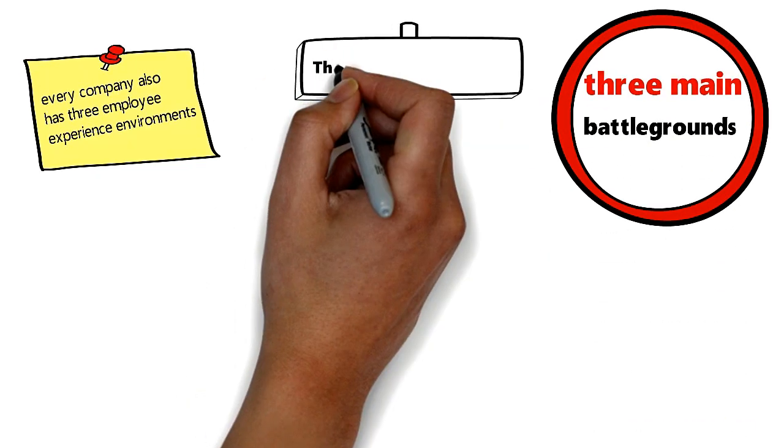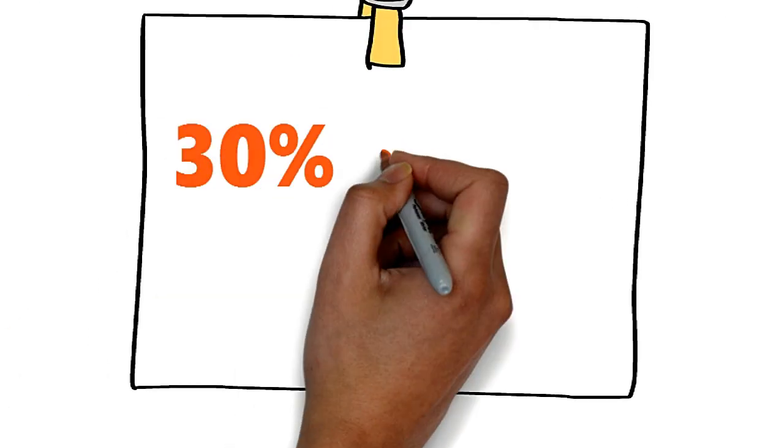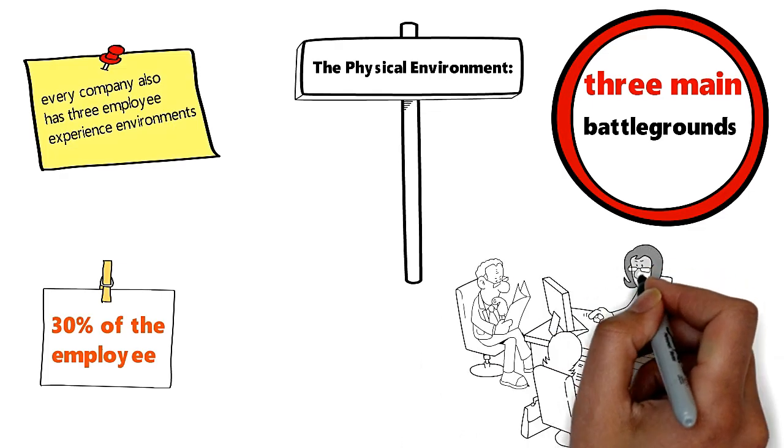As well as having a reason for being, every company also has three employee experience environments. These are basically the three main battlegrounds that determine your employee experience. The Physical Environment is the one in which employees actually work, and it comprises 30% of the employee experience.